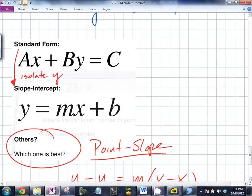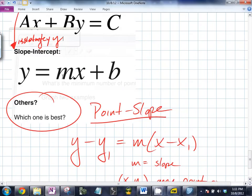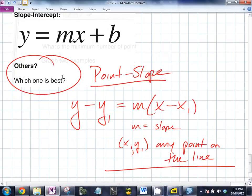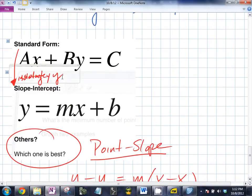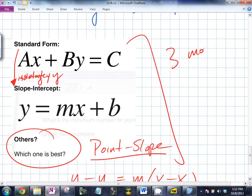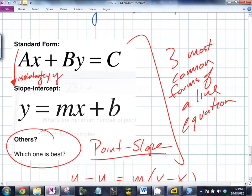The key thing is, are these just three of an infinite number? Sure. These are the three most common forms of a line equation. Those are the most common. The one we're working on right now, the one we're focusing on right now, is the middle one, right here. This is the one we're focusing on right now.